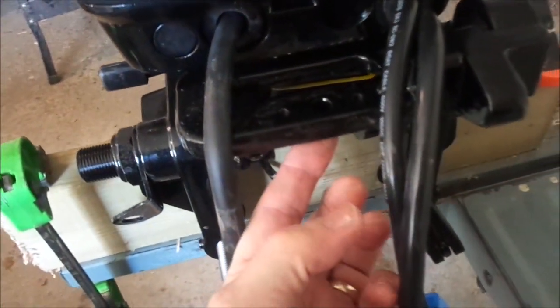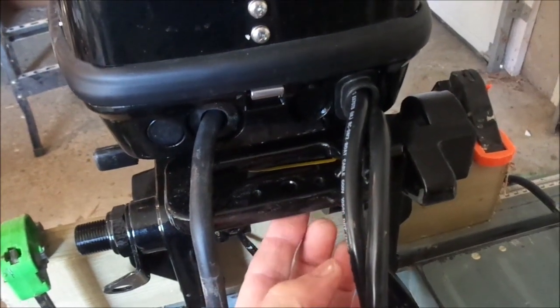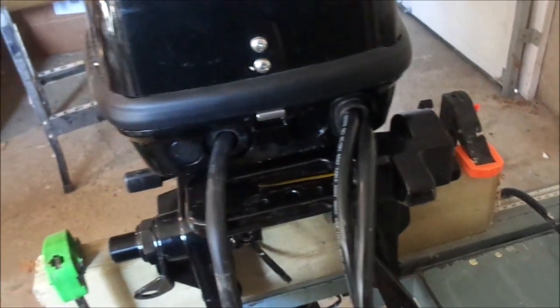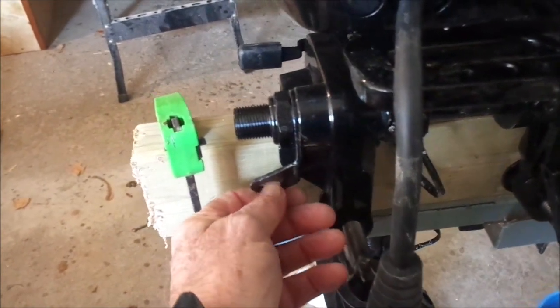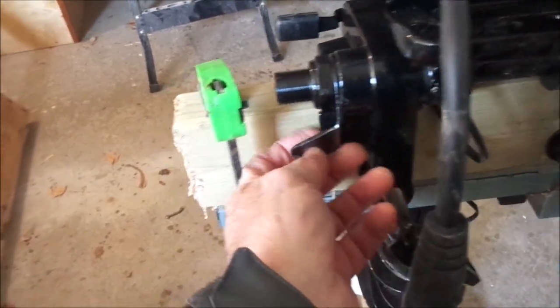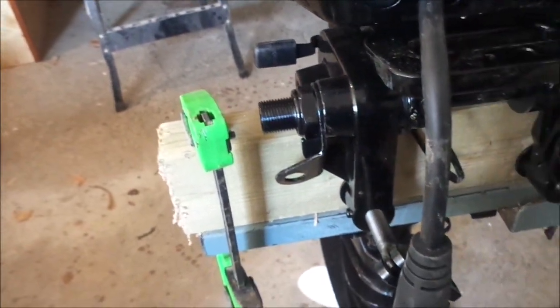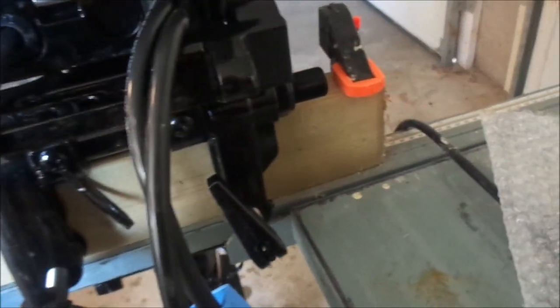This little hole right here is where the link arm connects to. So it just bolts up through there, pretty straightforward. This little tab here is for tying a rope onto, I guess for safety. I'm going to be bolting my motor right to the transom, so won't have a need for that.